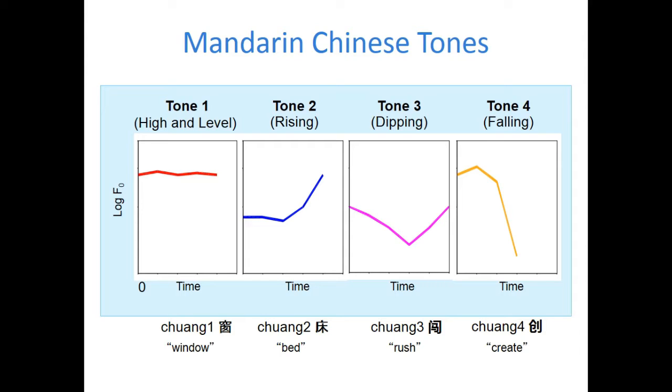Lexical tone refers to modulation in the pitch of a speaker's voice during articulation of a syllable, which is used to distinguish different lexical items or words from one another.